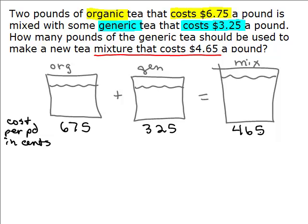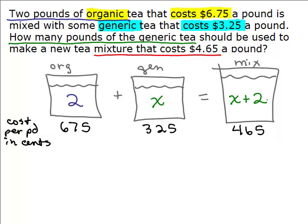Now, what do we know? Does it tell us how much organic tea we're using? Actually it does — we've got 2 pounds of the organic tea. What about the generic tea? That's the big question: how many pounds of the generic tea? We don't know. So let's use a variable X. If we have 2 pounds of organic tea and throw in X pounds of generic tea, we'd have X plus 2 pounds altogether in the mixture.